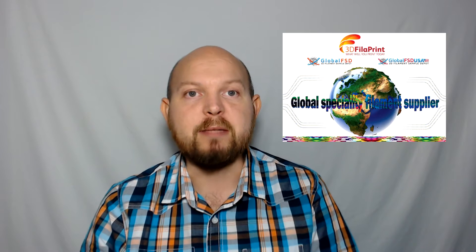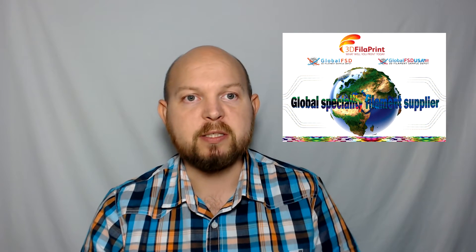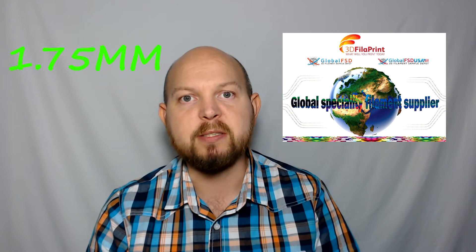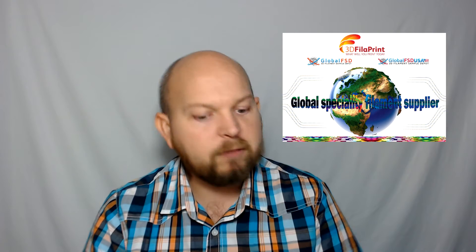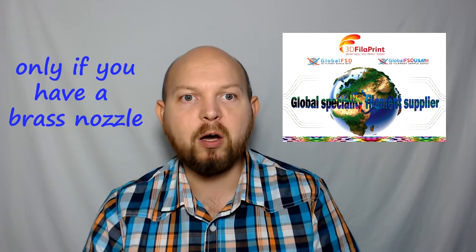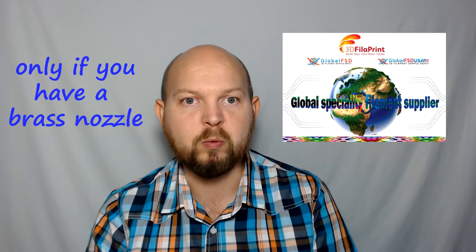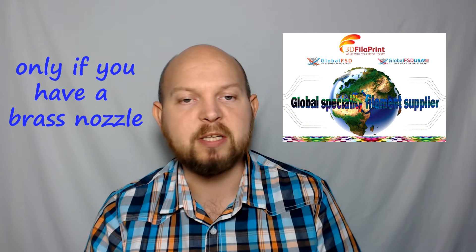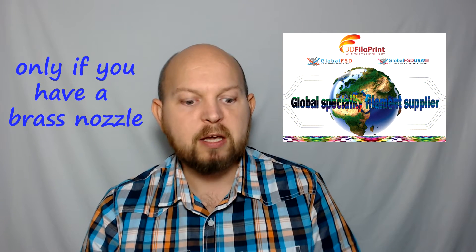Today we will be testing Magnetic Iron PLA by Proto Pasta. It comes in two different sizes: 1.75 millimeters and 2.85 millimeters. It is a lovely filament to print with. However, after printing a whole spool, it is recommended that you change your nozzle because it's such an abrasive filament to work with. It's okay if you're just doing little things—then you don't need to change your nozzle.